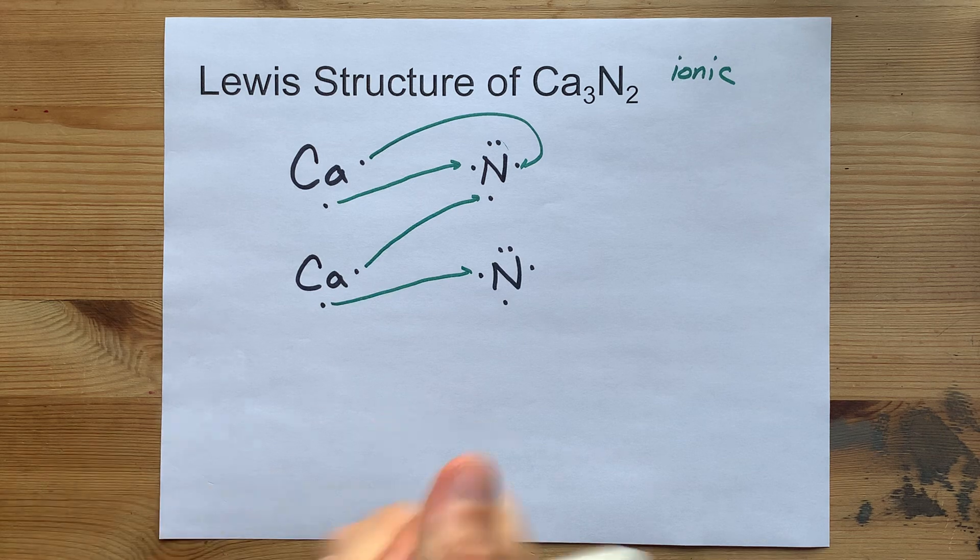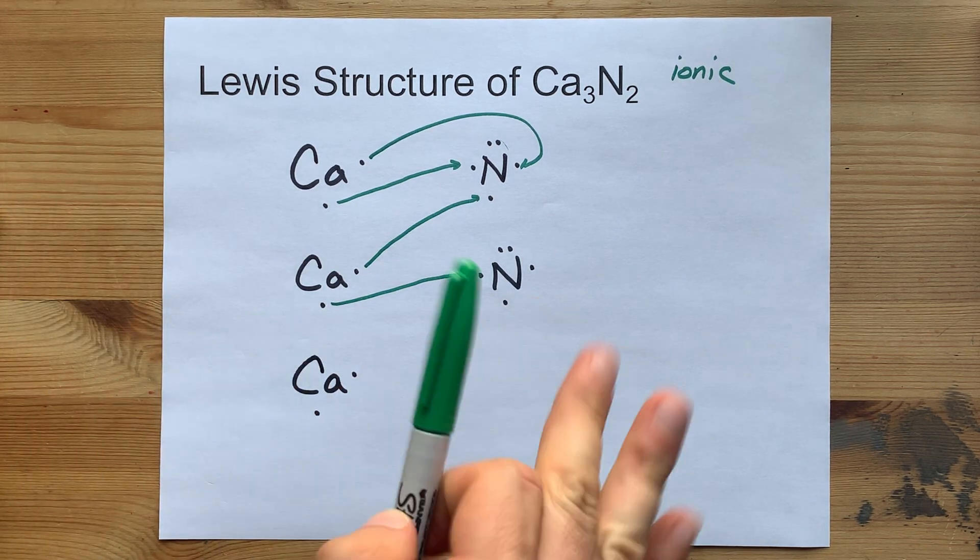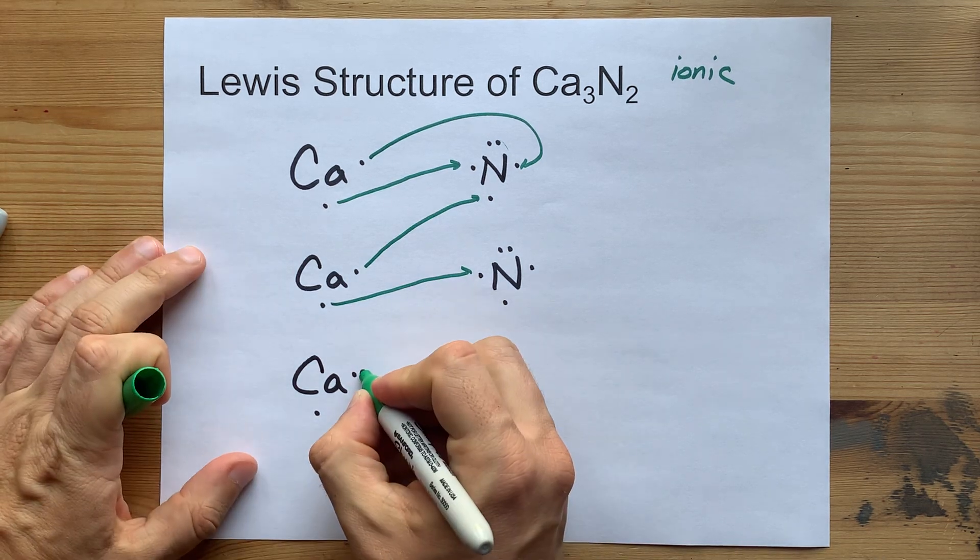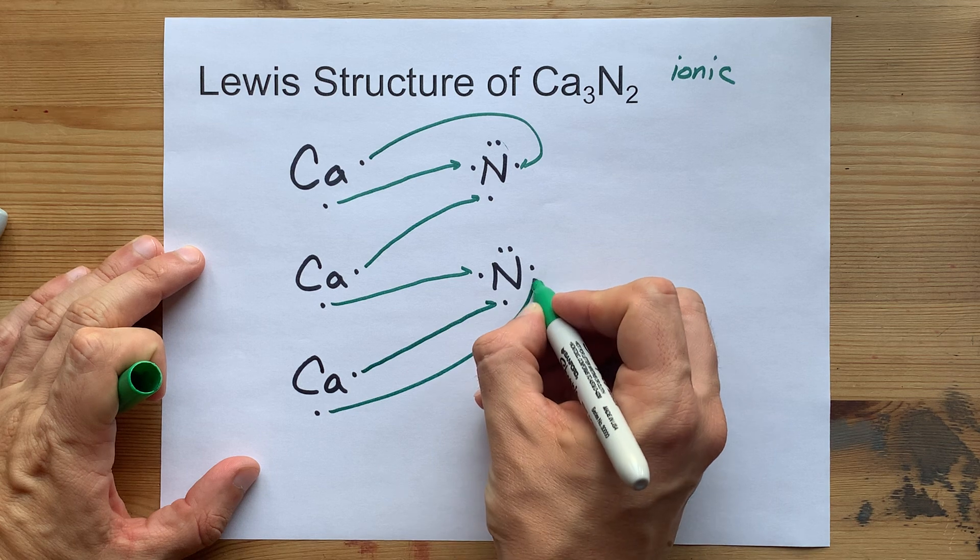So, bring in another calcium with its two valence electrons. Finally, that electron will pair up here. This electron pairs up here.